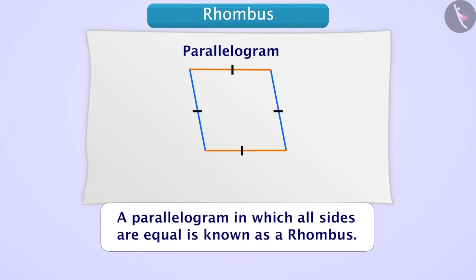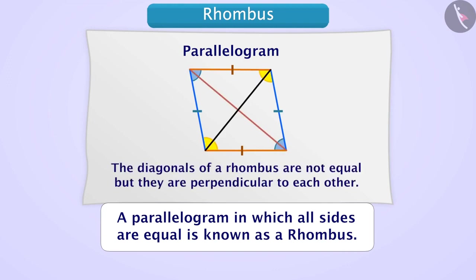The rhombus has its own properties. Its opposite sides are parallel and they are equal. If we measure all its angles, we find that opposite angles are equal. If we talk about its diagonals, the diagonals of a rhombus are not equal, but they intersect each other at 90 degrees, which means they are perpendicular.